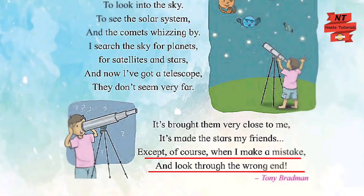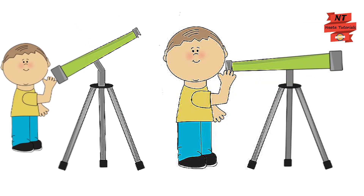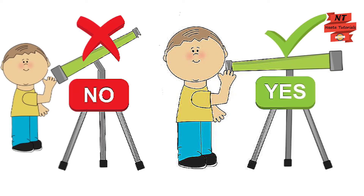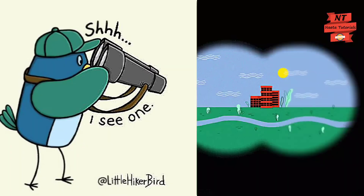The little boy says his friends — the stars — seem to go away when he looks through the wrong end of the telescope. If you look through the wrong end of the telescope, it does just the opposite: instead of seeing objects closely, you will see them more far away, and then they will no more be your friends. So be very careful while using the telescope.